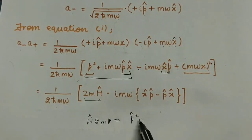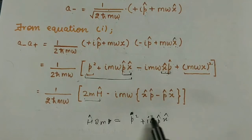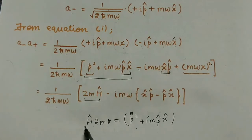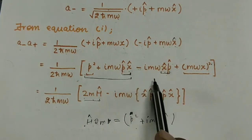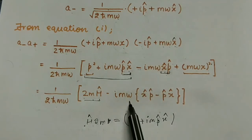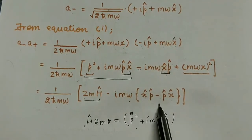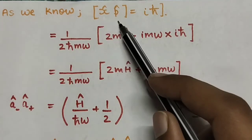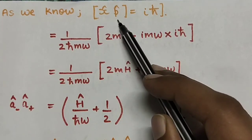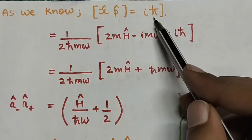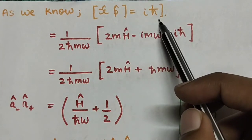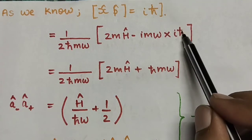So the full expression is 1 over 2ħmω times [p² + imω(xp − px)]. We take imω as common, leaving the commutator xp − px. As you know, the commutator of the position operator and momentum operator gives an uncertainty, which equals iħ. So I can replace the commutator [x, p] with iħ.